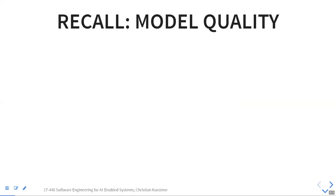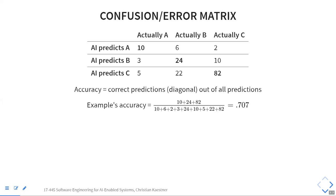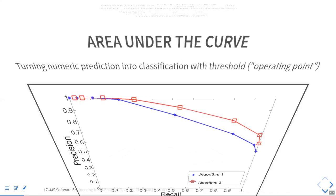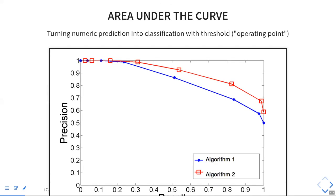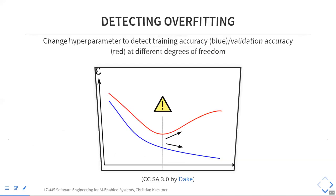We talked about model quality before, mostly from a data science mindset: we have a fixed dataset, we train on part of it and evaluate on another part. We talked about a bunch of different qualities — accuracy for classifiers was one of the basic metrics, and also area under the curve, which has to do with different thresholds and how you can still compare models.